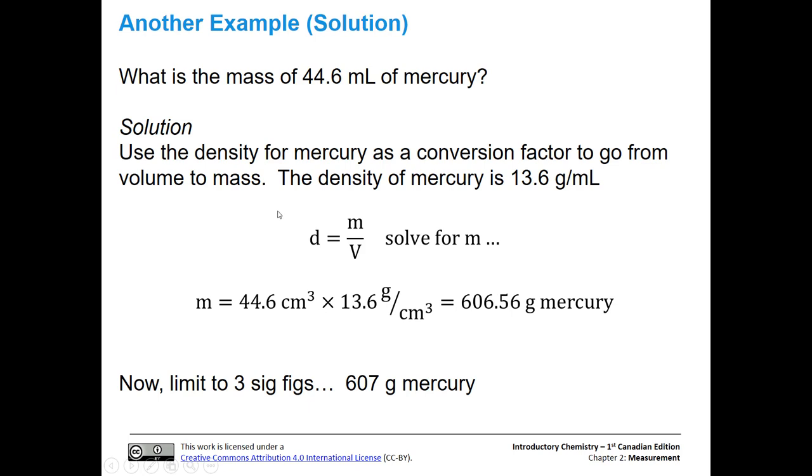Alright, so let's go through that. We're going to use the density for mercury from the table. If you don't have it on a table, you can always look it up online. We're going to go from volume to mass in this case. The density of mercury is 13.6 g/mL. We are starting with milliliters, so we want to use grams per milliliter as opposed to grams per cubic centimeter. We're going to solve for mass. Volume multiplied by the density gives us our mass of mercury. The milliliters cancel out, and we end up with 606.56 grams of mercury.